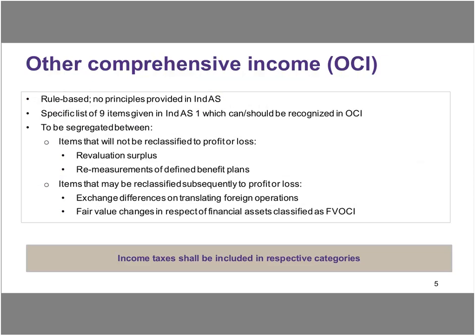The Other Comprehensive Income is broken down into two parts. The first part being items that will not be reclassified to P&L. In the first instance those items will be recorded in P&L, and going forward they are not going to be reclassified back into P&L. Examples being revaluation surplus in respect of property, plant and equipment, and any re-measurement on account of defined benefit plans — any actuarial gains or losses for defined benefit plans like gratuity. The second basket is for items that may be reclassified subsequently to P&L. Examples are exchange differences which arise on translating foreign operations and certain fair value changes in respect of financial assets classified as FVOCI.